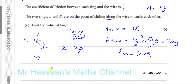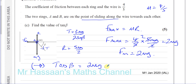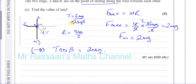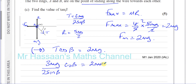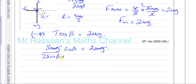Resolving forces on ring A horizontally: the horizontal component of tension T cosine beta equals F_max equals 2MG. Substituting T equals 3MG over 2 sine beta gives: 3MG over 2 sine beta times cosine beta equals 2MG. Cancelling MG and multiplying both sides by 2 sine beta: 3 cosine beta equals 4 sine beta.